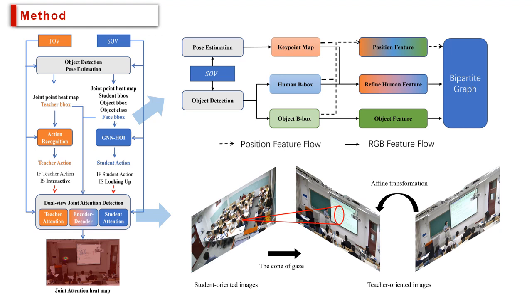Second, the dual-view joint attention detection model consists of three components: the student attention branch, teacher attention branch, and encoder-decoder module.